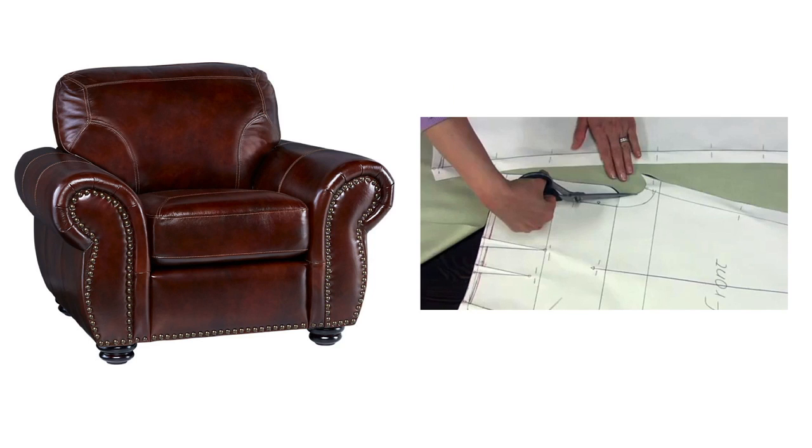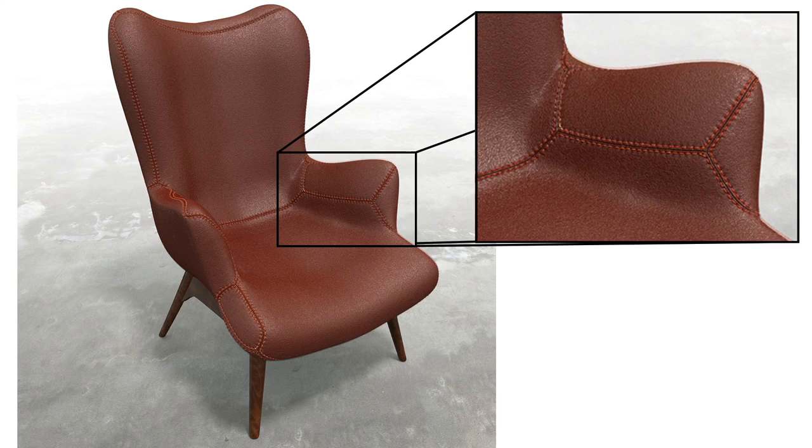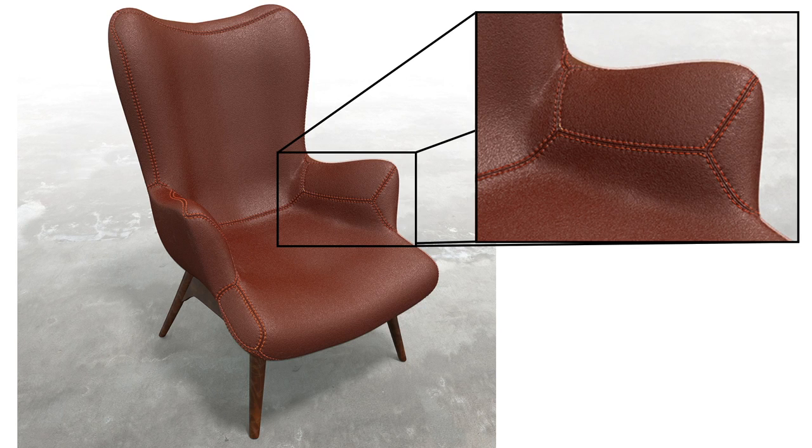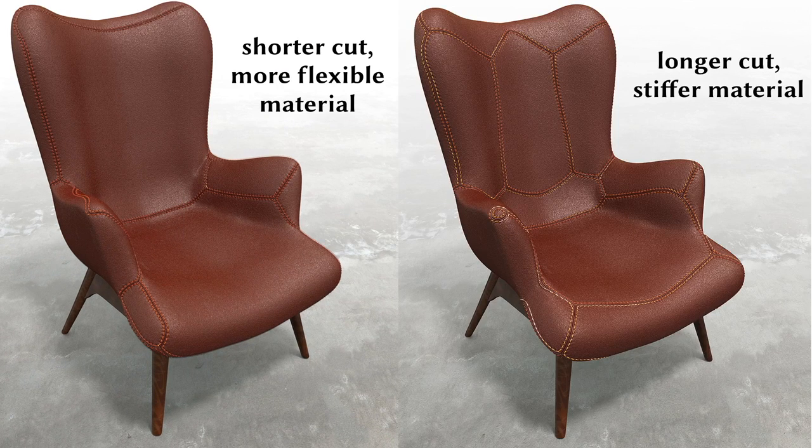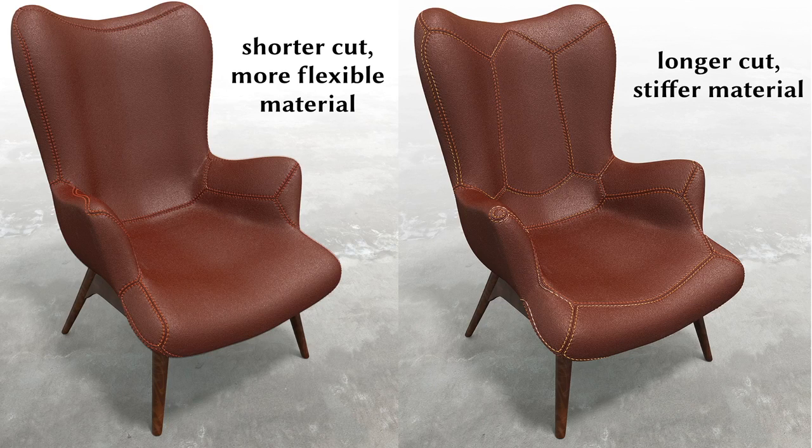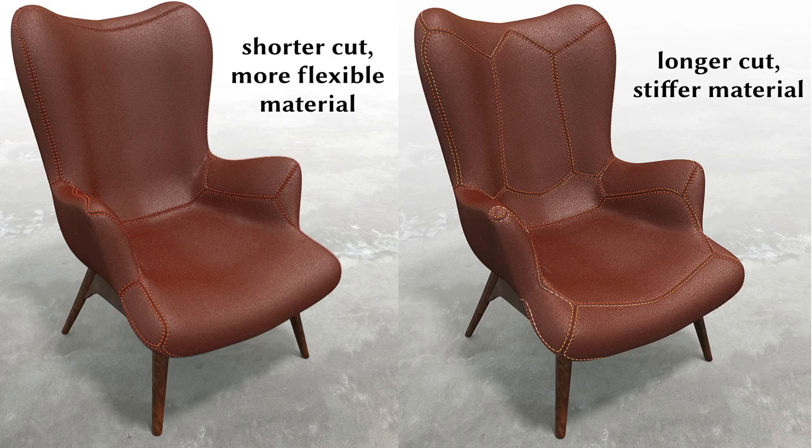Now we can also return to our motivating example, designing a collection of low distortion patches which could be used to fabricate a known geometry. Here we show the results of applying our method to this task, generating low distortion patches on a chair geometry. We can again adapt the strength of our length penalty to generate alternate designs. Here, a longer cut yields a design which I think looks a bit more like a race car chair.